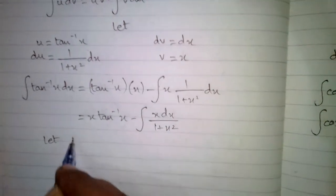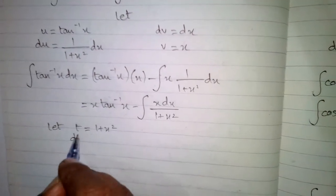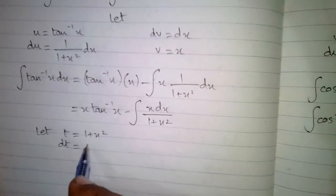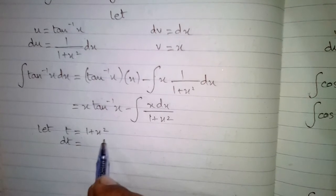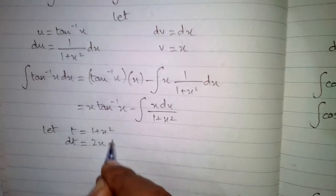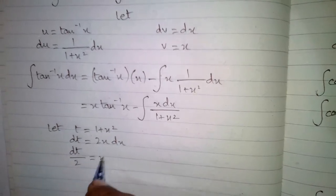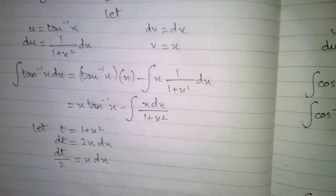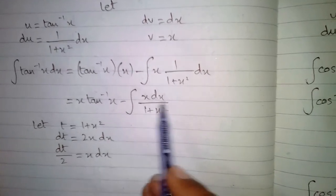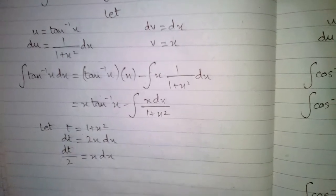Now let t equal 1 plus x square. The differential dt is equal to the derivative of 1 plus x square. The derivative of 1 is 0 and the derivative of x square is 2x dx. This gives us dt upon 2 equal to x times dx. We substitute dt upon 2 in place of x dx and t in place of 1 plus x square.